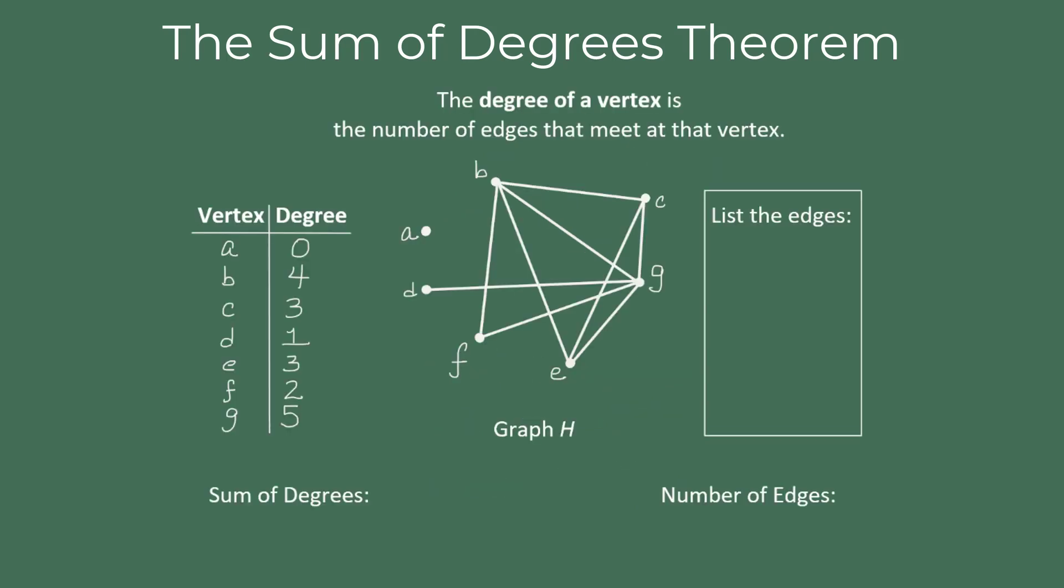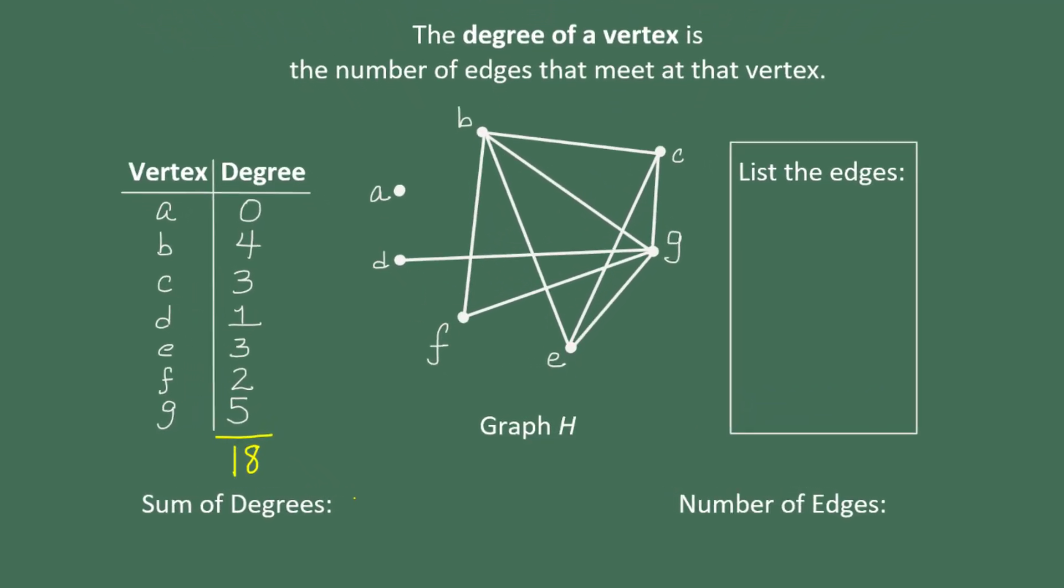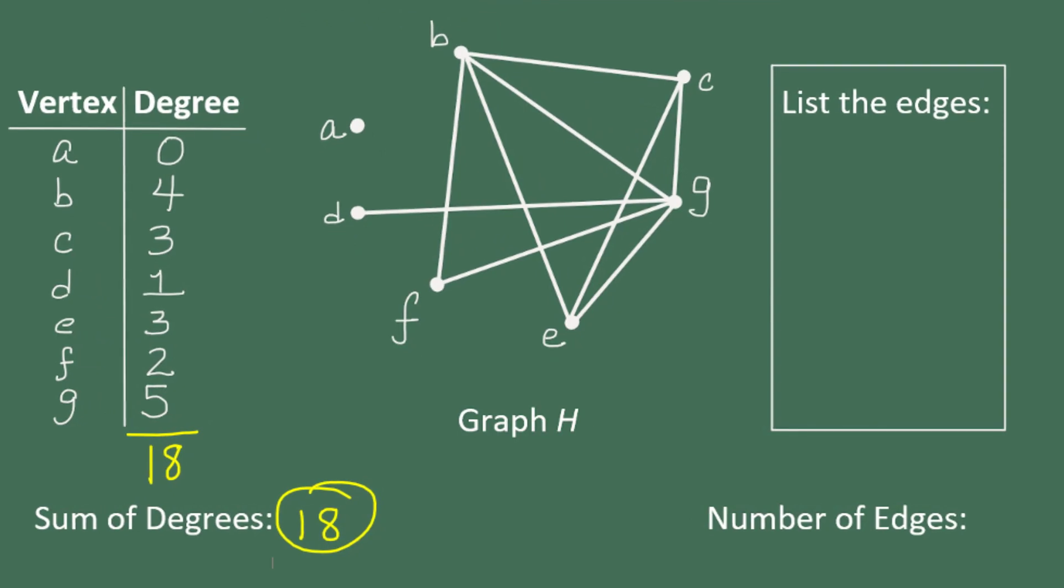In a previous video, we looked at graph H. We found the degree of each vertex, and we even added all the degrees together. When we found the sum of the degrees, it turned out to be 18. And we talked about the significance of that, but we're going to go a step further. This time, we're going to list each of the edges in the graph, and then count the number of edges and see how that relates to the sum of the degrees.